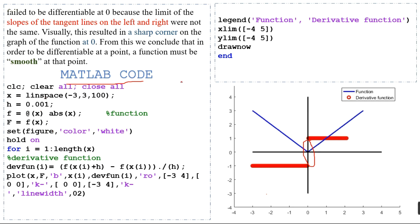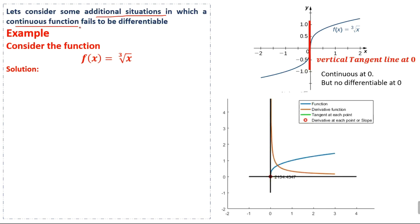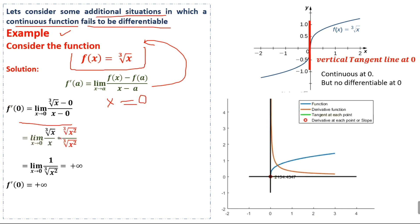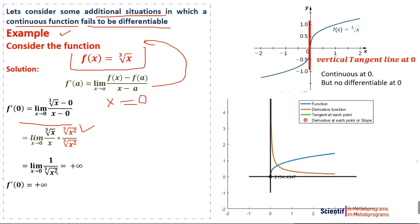Let us consider additional situations in which a continuous function fails to be differentiable. Consider f(x) = ∛x. We apply the definition of the derivative to this function at x = 0, simplifying by multiplying and dividing appropriately. We get the limit as x approaches 0 of 1 / (∛x²), which equals positive infinity. Therefore at x = 0 the function is not differentiable — the slope of the tangent line at x = 0 is infinite.